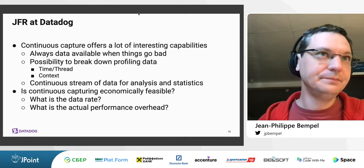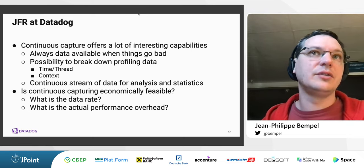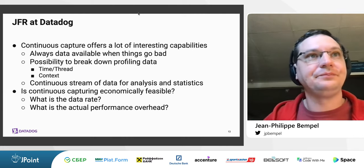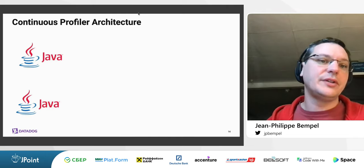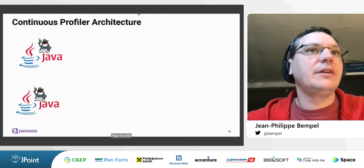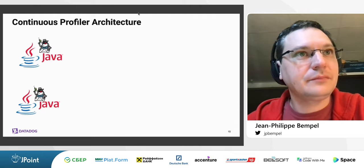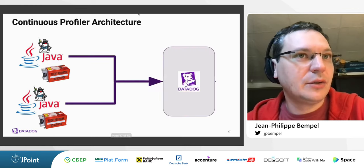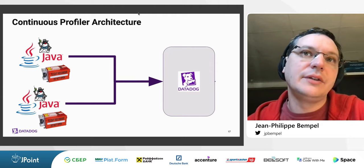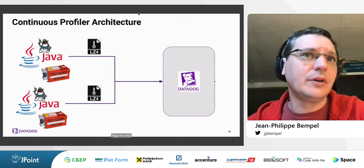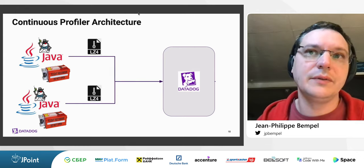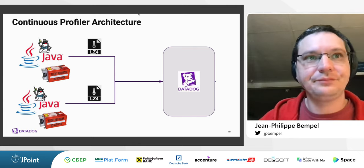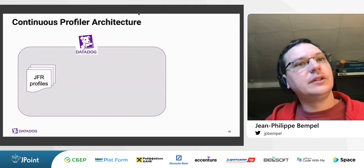Continuous profiling also offers the ability to break down profiling data: many events are associated with a time and a thread, and if you can provide context about what the thread is doing during a certain time, any profiling data captured during that time can help shed more light on what was going on. At Datadog we have customers with multiple Java processes, and we have installed a Java agent on all JVMs we are profiling. This Java agent uses the JFR Java API to start the recording, and every 60 seconds we take a snapshot and upload it to our Datadog backend.